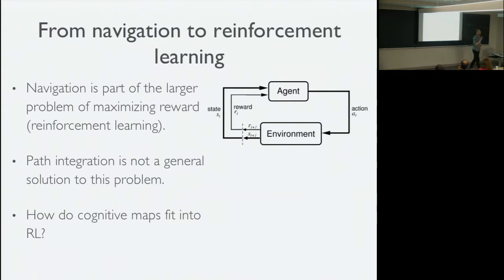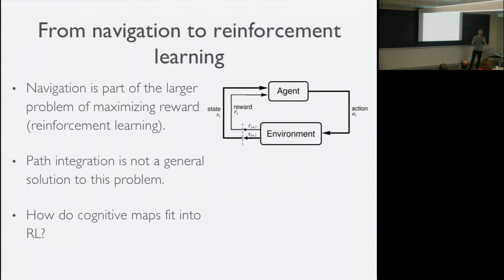I want to take a step back and think about how you would construct a cognitive map from first principles, starting from the perspective of designing an agent that actually acts in the world. This is really the problem solved by reinforcement learning. When people hear the term reinforcement learning, they often think about particular algorithms — something like getting rewarded and doing whatever you did again. But I'm referring to reinforcement learning as a problem specification: maximization of cumulative reward or discounted cumulative reward. Path integration is not a general solution to this problem.